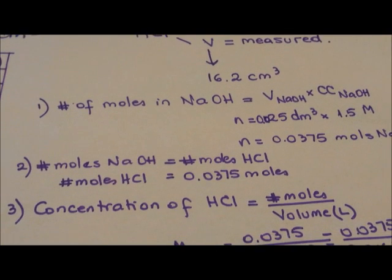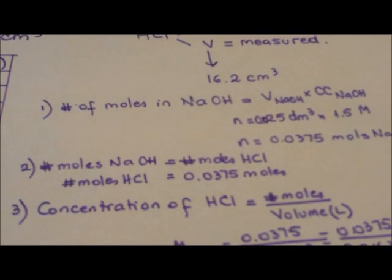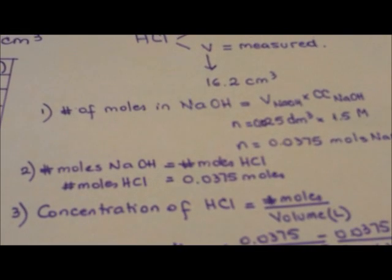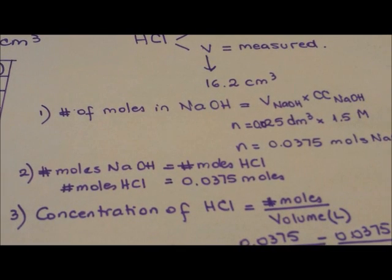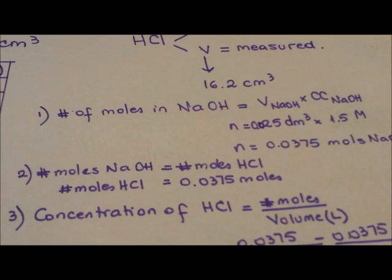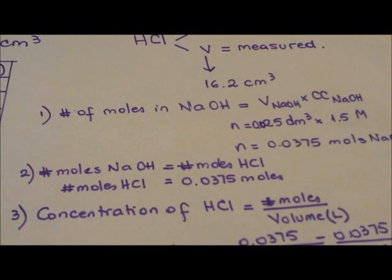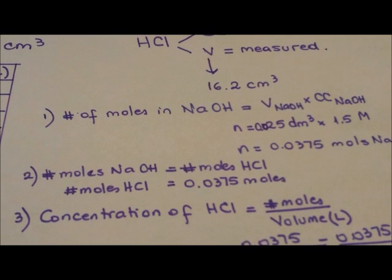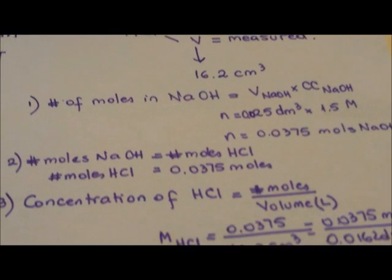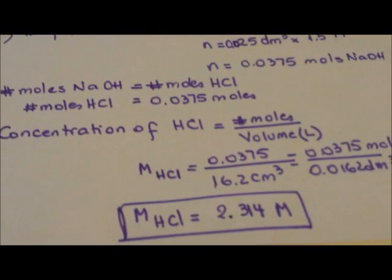The second step will be calculating the moles of hydrochloric acid that balance the moles of sodium hydroxide. But we know that sodium hydroxide and hydrochloric acid react in a 1-to-1 ratio. So actually, the number of moles of the hydrochloric acid will be exactly the same as the ones calculated in step number one.